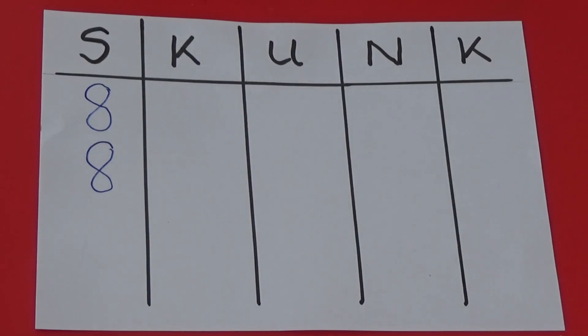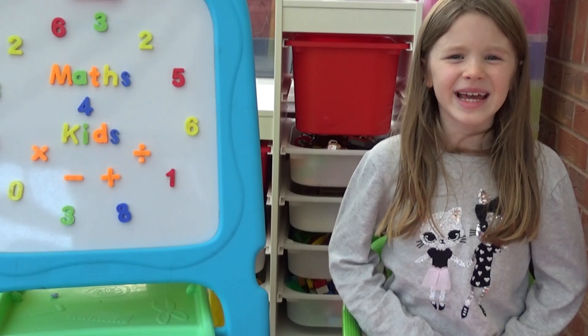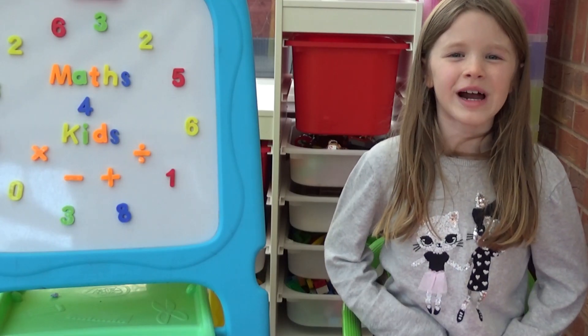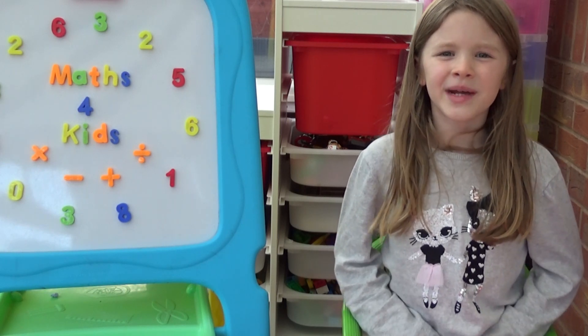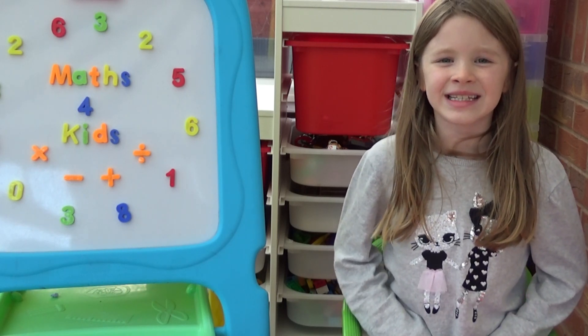Once they have had their go it comes back to me and I see how many points I can score under the K. We keep playing until all the rounds have been played and then we add up our totals at the end. The winner is the person with the most points at the end of the game.